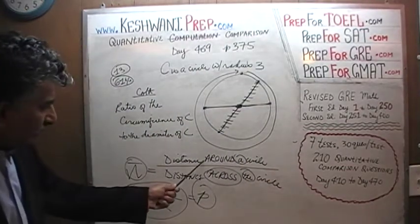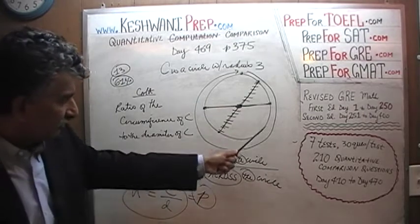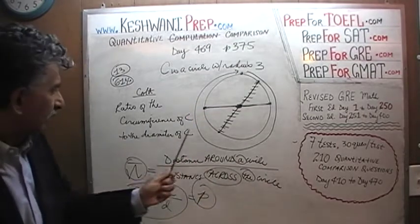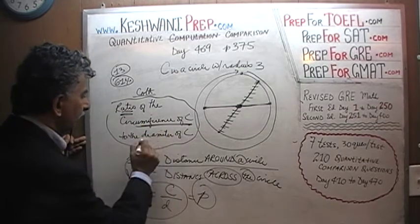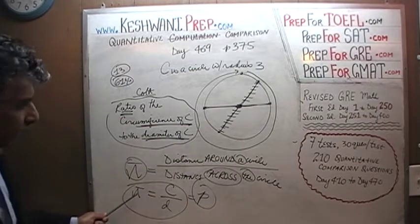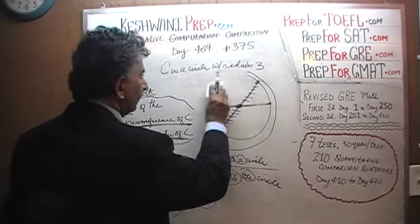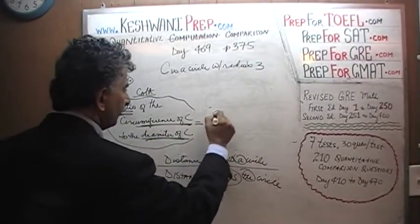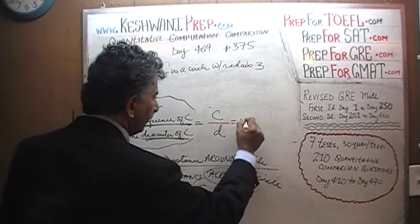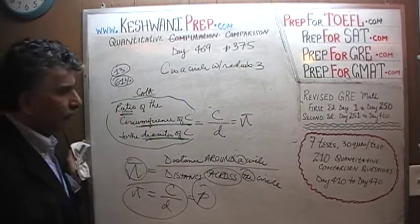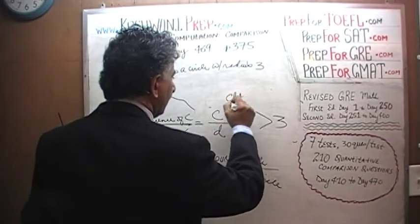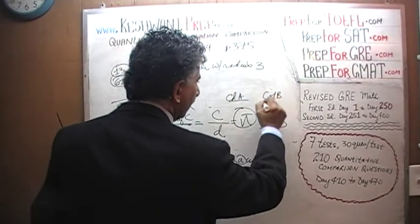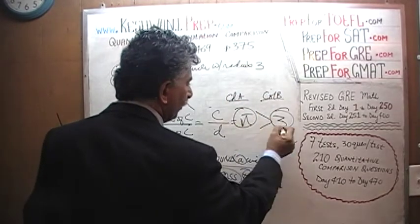Pi is the distance around the circle to the distance across the circle. What does column A say? The ratio of circumference of the circle to the diameter — we have just found out that is pi. Column A has pi in it and column B has 3 in it. Of course pi is more than 3, so the answer is A.